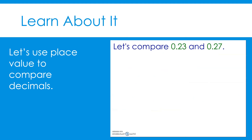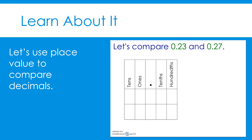Let's compare twenty-three hundredths and twenty-seven hundredths using place value. We will use a place value chart with spaces for the tens, ones, tenths, and hundredths places. If we need to compare a decimal beyond these places, we can expand the chart. Let's start by writing twenty-three hundredths: no tens, so we leave the tens place blank, write a zero in the ones place, place the decimal point, write a two in the tenths place, and write a three in the hundredths place.